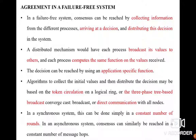Good morning students. Today we are going to see the topic: agreement in a failure-free system. In a failure-free system, you can easily achieve agreement by collecting information from different processes, then arriving at a solution or decision. That decision is then distributed to the remaining processes in the system. A distributed mechanism is used to broadcast the values to others using some application-specific function, and all processes should compute the same function on the values received.